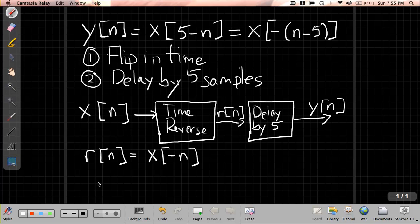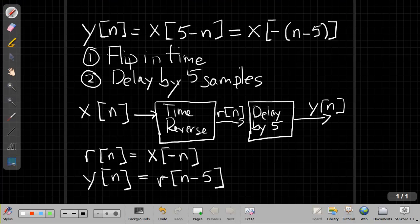So I can connect those, and then the delay by five we've also seen. We can see that y[n] is equal to r[n-5]. And now I can put this up via, let me make it a little clearer here by using color.